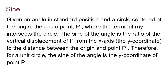Let's first look at the definition of sine. Given an angle in standard position and a circle centered at the origin, there is a point P where the terminal ray intersects the circle. The sine of the angle is the ratio of the vertical displacement of P from the x-axis to the distance between the origin and P. Therefore, for a unit circle, the sine of the angle is the y-coordinate of the point P.